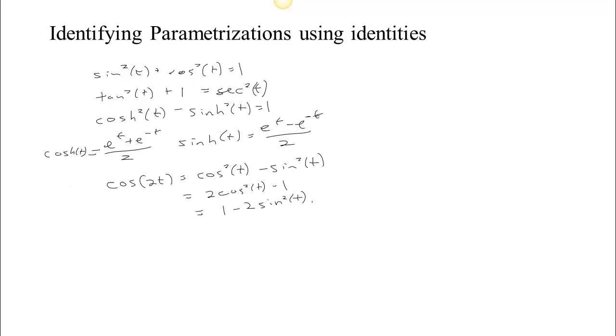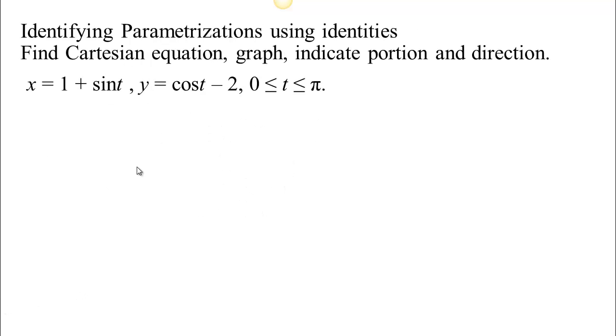Let's look at an example of how an identity might be helpful. We have here a parametrization. X is a function of the parameter t, and Y is a function of the parameter t. We need to figure out what curve are we talking about, and what part of the curve do we see, and in what direction do we move along that curve. When I see that X is some direct function of sine, and Y is a direct function of cosine, I think to myself about that identity, that sine squared t plus cosine squared t equals 1.